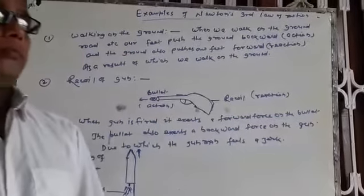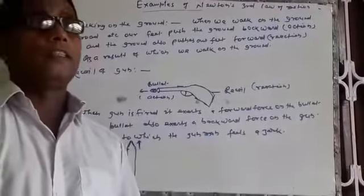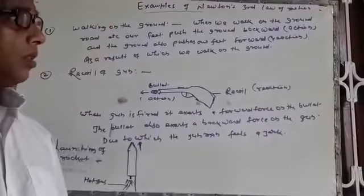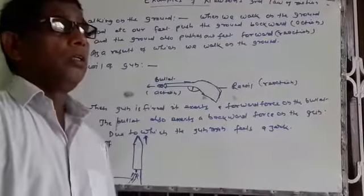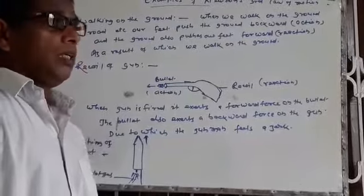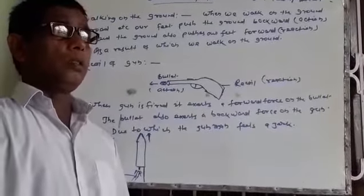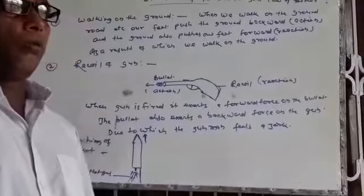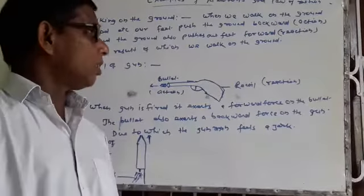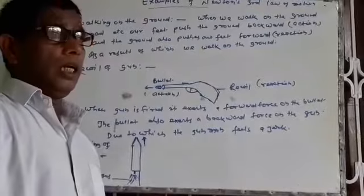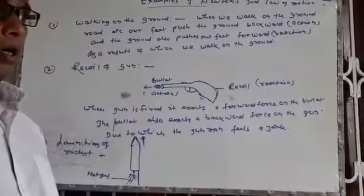Dear students, yesterday I explained Newton's third law of motion. I am repeating the statement: action and reaction happen simultaneously. This means there is equal and opposite reaction to every action. Each action has its own reaction. This is Newton's third law of motion.